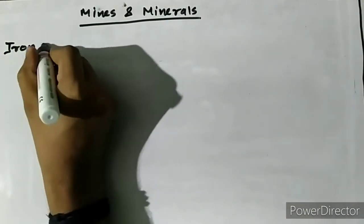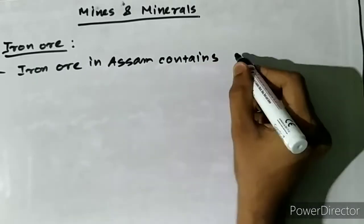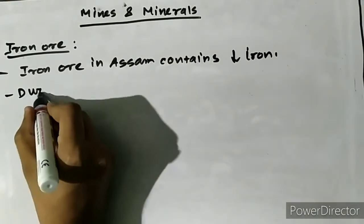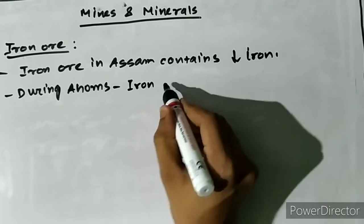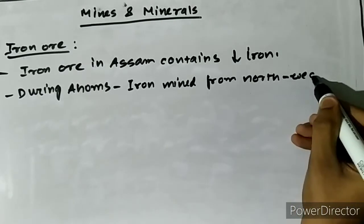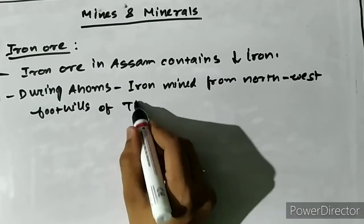Starting from iron ore, the iron ore deposits so far explored in Assam are found to contain a very low proportion of iron. Despite this, iron ore used to be mined in Assam from medieval times. During the Ahom period, iron was mined from the northwestern foothills of the region.